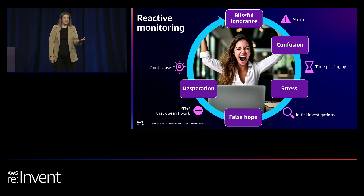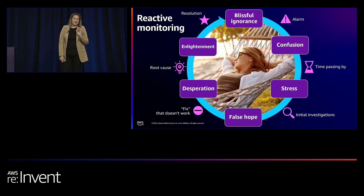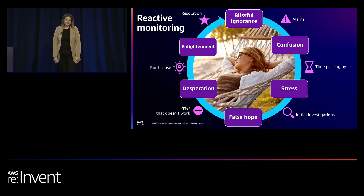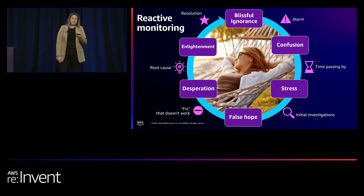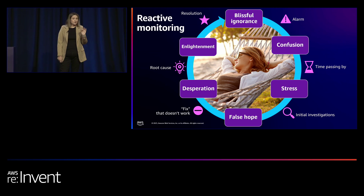Eventually somebody works out the root cause and you feel a sense of enlightenment. The next step is actually quick — you know how to apply and QA a fix, and then you're back to blissful ignorance. There will always be problems, but the aim of a good observability strategy is to keep that cycle as quick as possible — to select tools that help you correlate, so you can cut out stress, false hope, and desperation from your day.